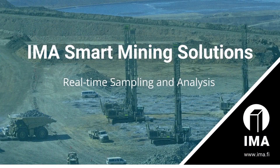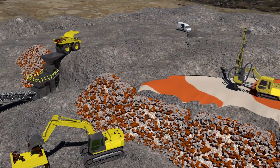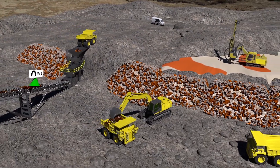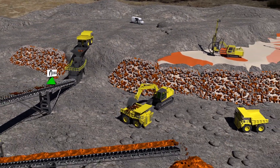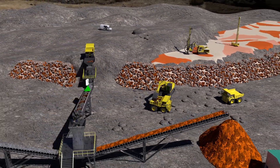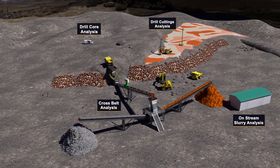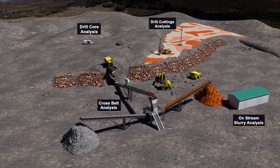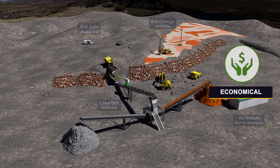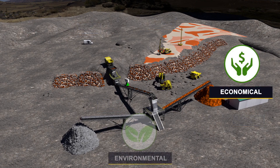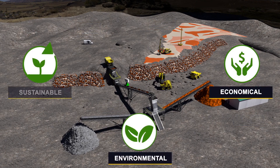EMA engineering sensor solutions provide continuous real-time sampling analysis results at each stage of the mining process. Data from EMA online mineral sensors provide 1,000 times more accurate data for ore and waste rock quality and location. Autonomous operations require autonomous sampling and analysis, further lowering mining and processing costs, improving the environment, and increasing ore reserves.